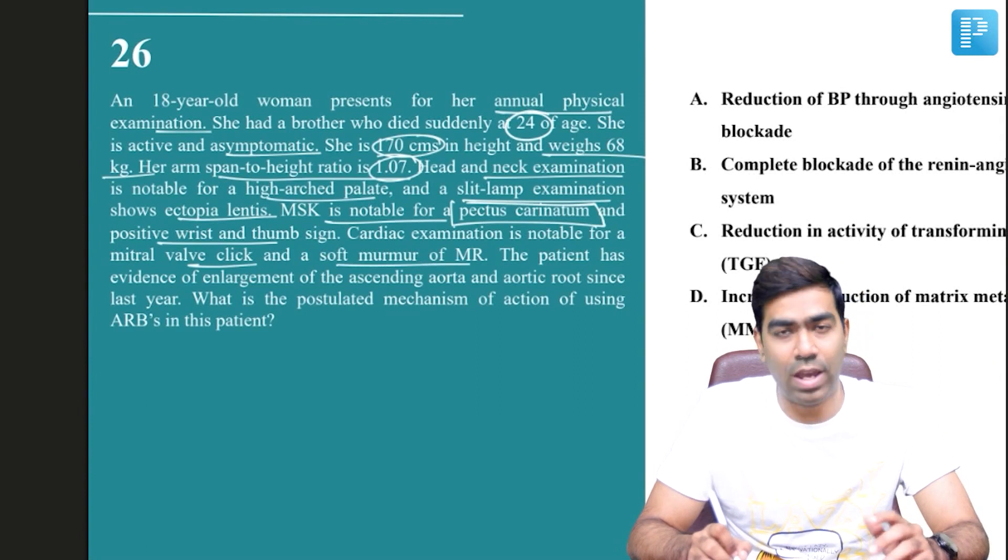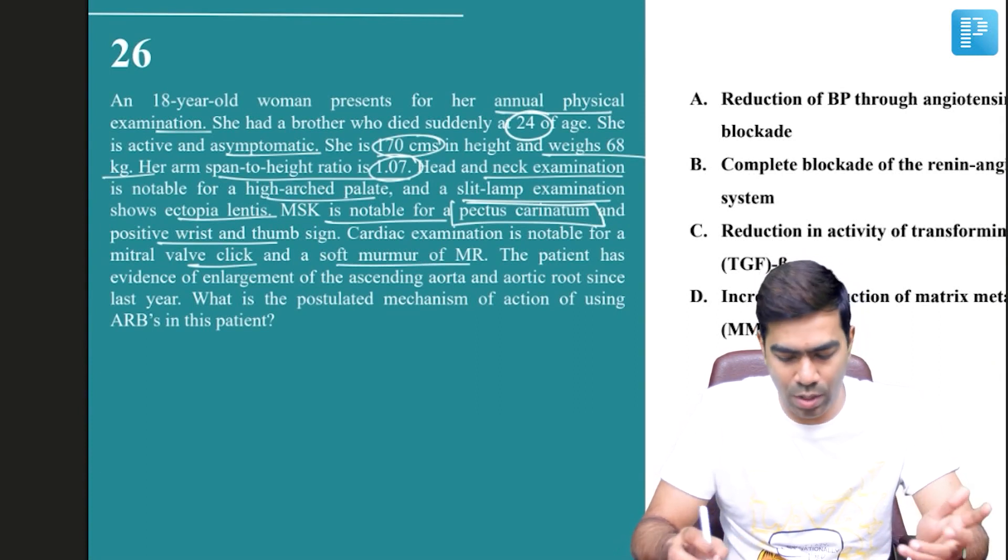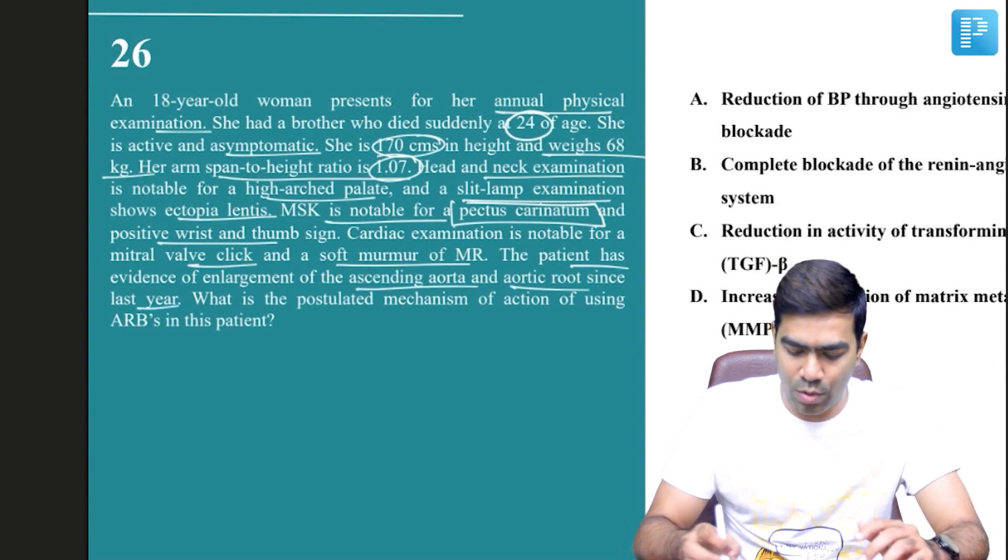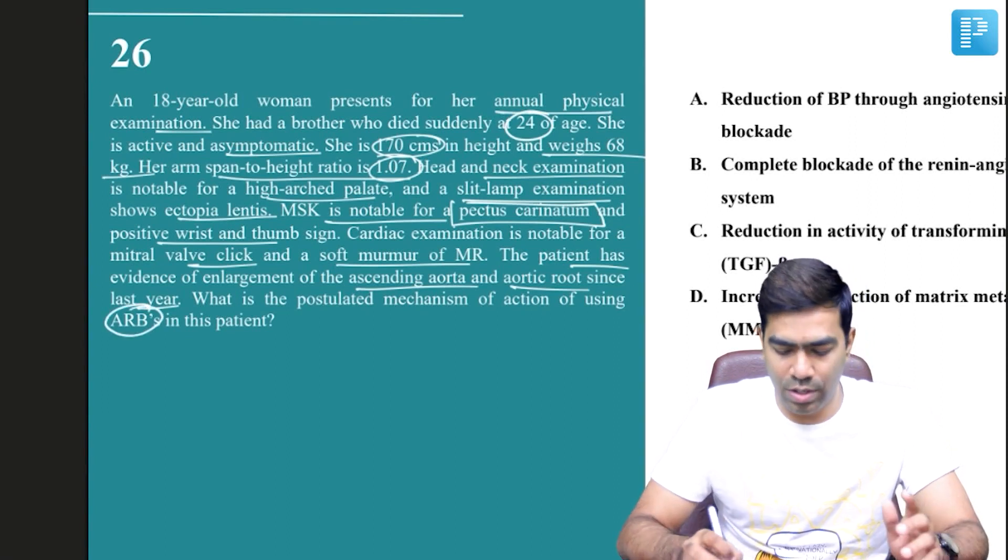Cardiac exam shows a mitral valve click and a soft murmur of MR, suggestive of mitral valve prolapse. The patient has evidence of enlargement of the ascending aorta since last year. Now they want to use ARBs in this individual.